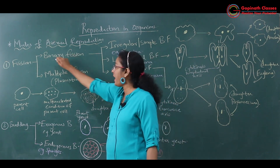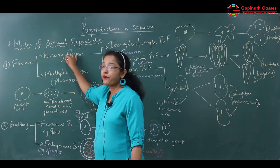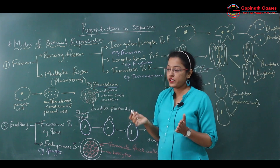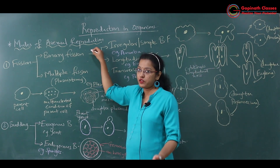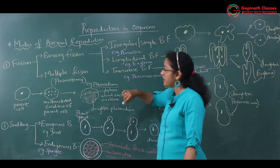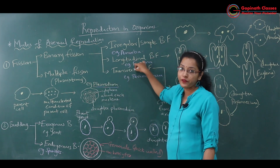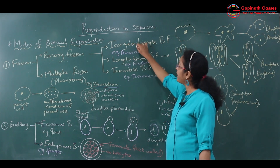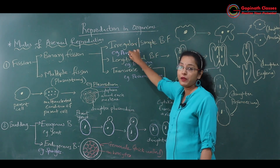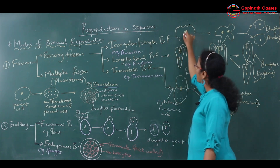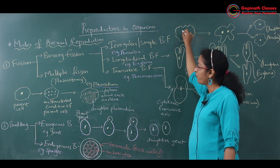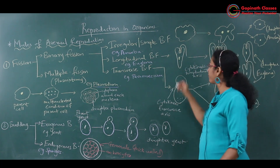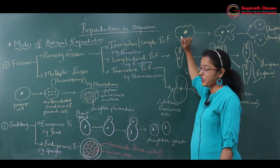The name itself tells us everything — binary, bi means two. So in binary fission, the parent cell will divide into two daughter cells. Binary fission occurs by three different ways. Some organisms will show irregular simple binary fission, for example in amoeba. In amoeba, binary fission is of irregular type, meaning there is irregular division of the nucleus as well as cytoplasm.